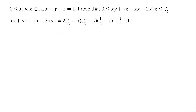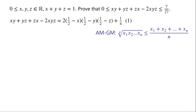We have derived an equation which contains the algebraic expression of interest given in the problem. The right side of the equation involves a product of three terms. We could apply the AM-GM inequality — the geometric mean is always less than or equal to the arithmetic mean — but AM-GM can only be applied to non-negative numbers. As at most only one of x, y, or z can be greater than a half, we divide the problem into two cases.